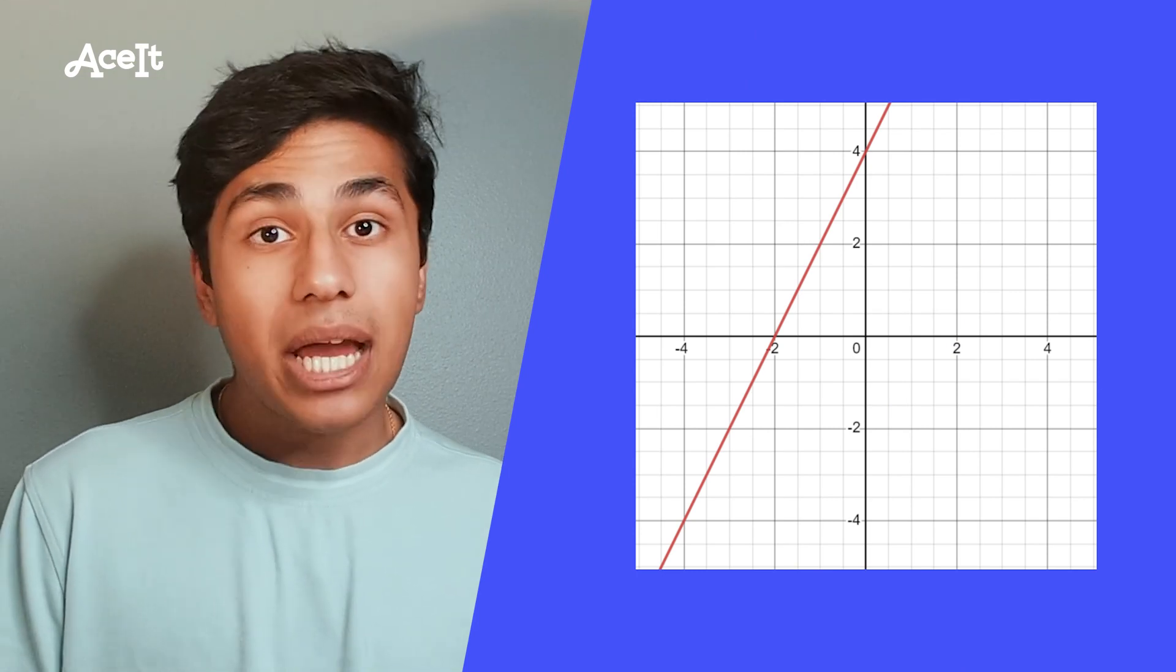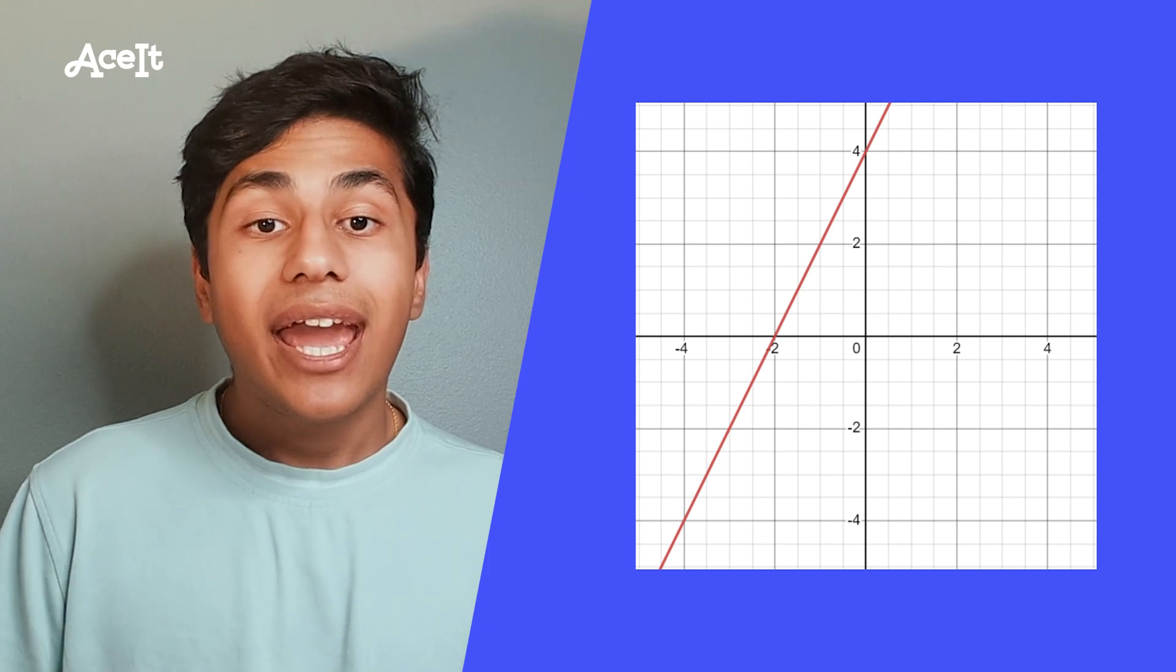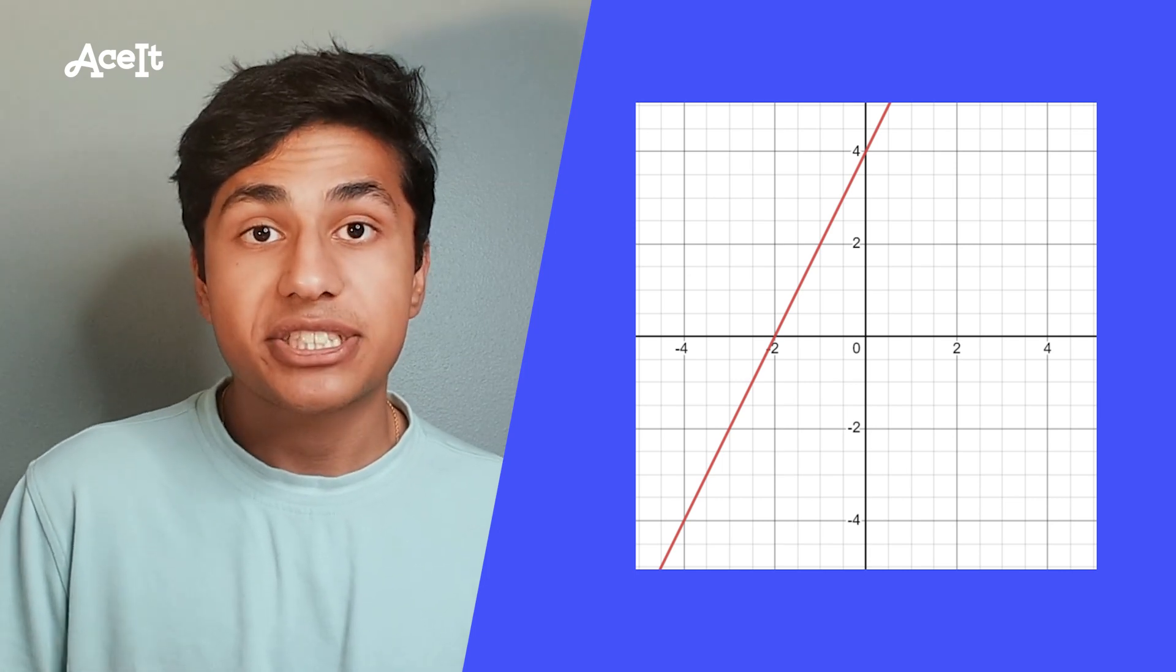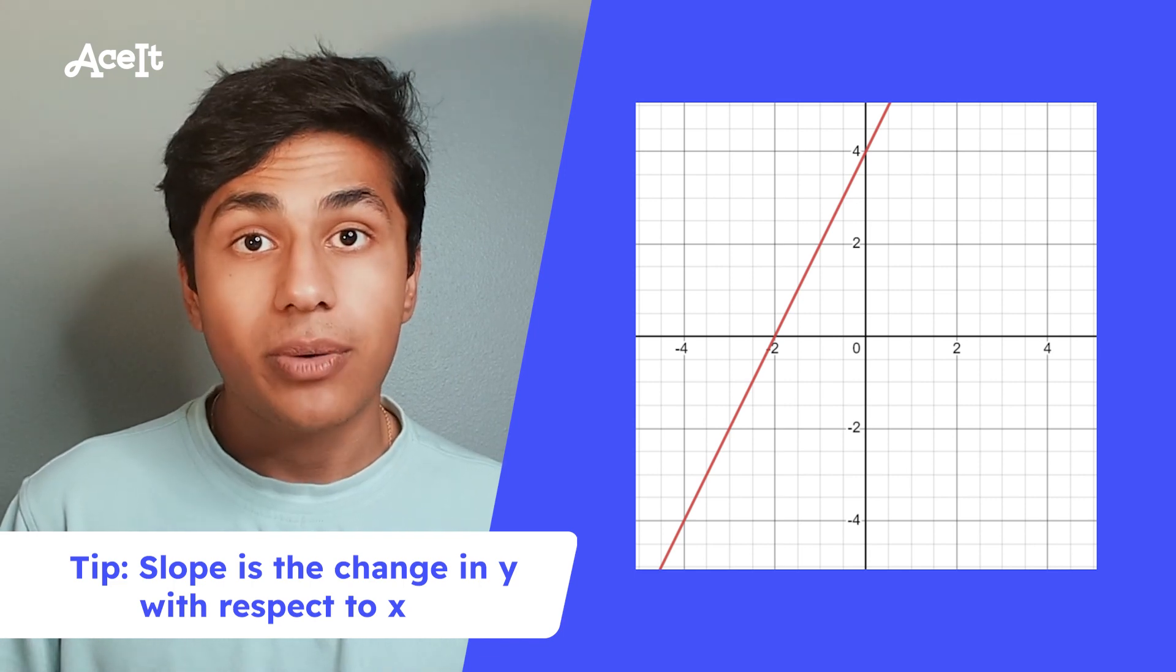These types of equations will usually establish some kind of relationship between two variables x and y, and the change in y with respect to the change in x is known as the slope. So let's take a look at this graph example right here.